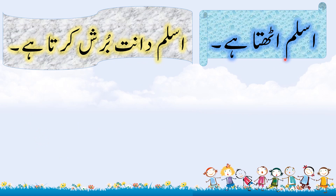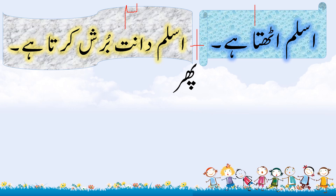دیکھیے بچوں، ہمارے پاس کتنے جملے ہیں؟ ہمارے پاس دو جملے ہیں۔ یہ پہلا جملہ ہے اور یہ دوسرا جملہ ہے۔ ان دو جملوں کو جوڑنے کے لیے ہم لفظ فر کا استعمال کرتی ہیں۔